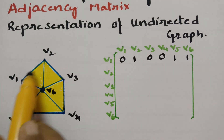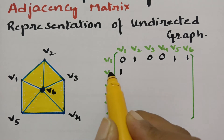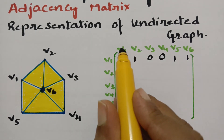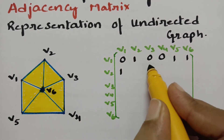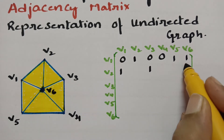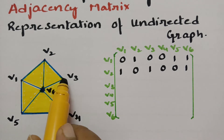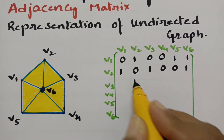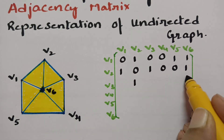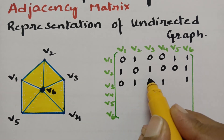Next, going with V2. V2 has three edges — one with V1 and next with V3. So I mark 1 at V1 and 1 at V3, and the remaining are all zeros. Next, V3 has three edges with V2, V6, and V4. So with V2 I make an edge, next V6 gets a 1, and next V4 gets a 1, and the remaining are all zeros.